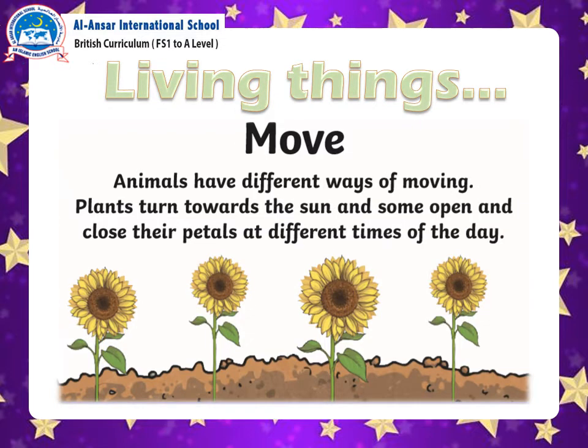Living things move. We walk and run with our legs. Animals move — some swim, some crawl, some slide or swing. Plants also have some movements: their petals open and close. Sunflowers move according to the light of the sun — they face the sun in every direction. That's how plants move.